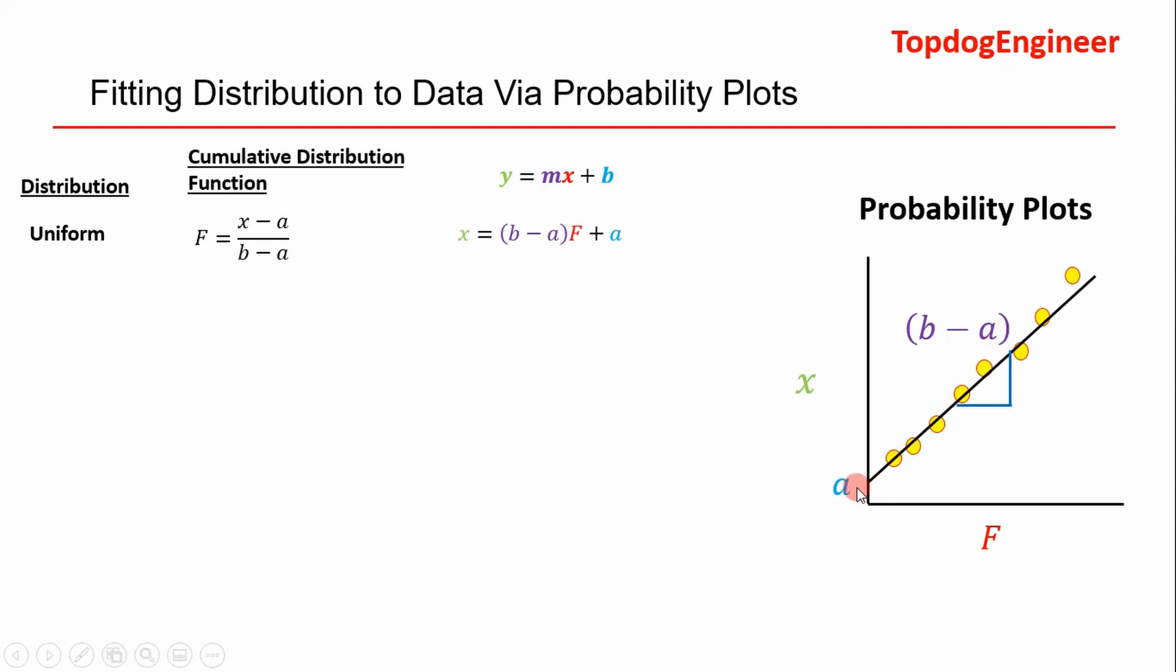B minus a is going to be your slope and a is going to be your intercept, so you can determine your two unknowns graphically. Then you've effectively modeled your data with the best fit distribution for the uniform distribution after you've run linear regression of course.